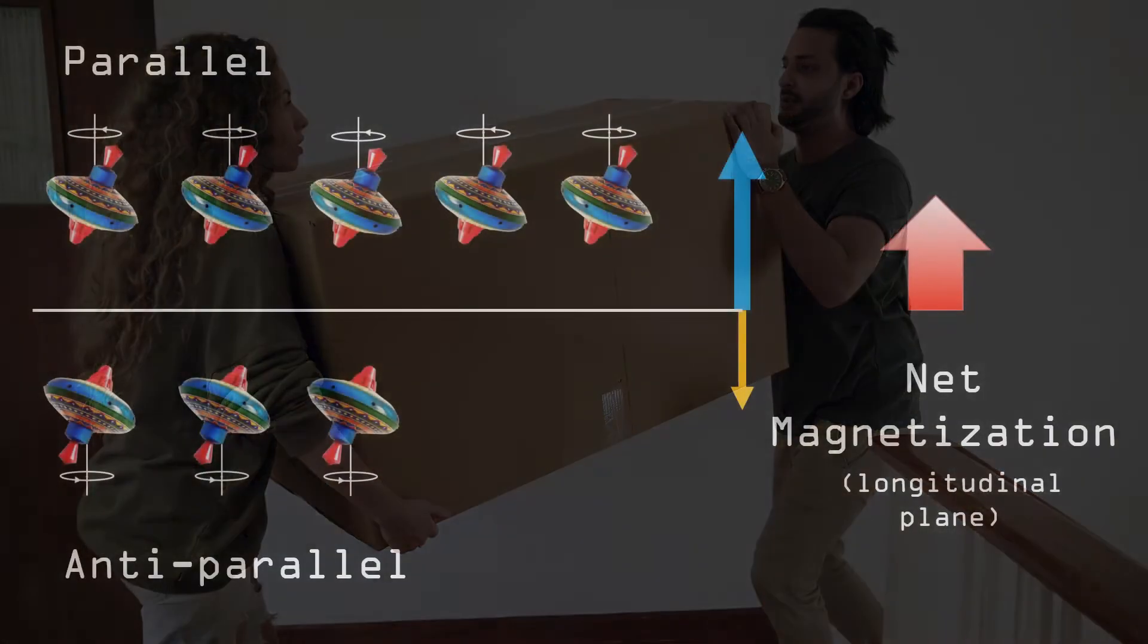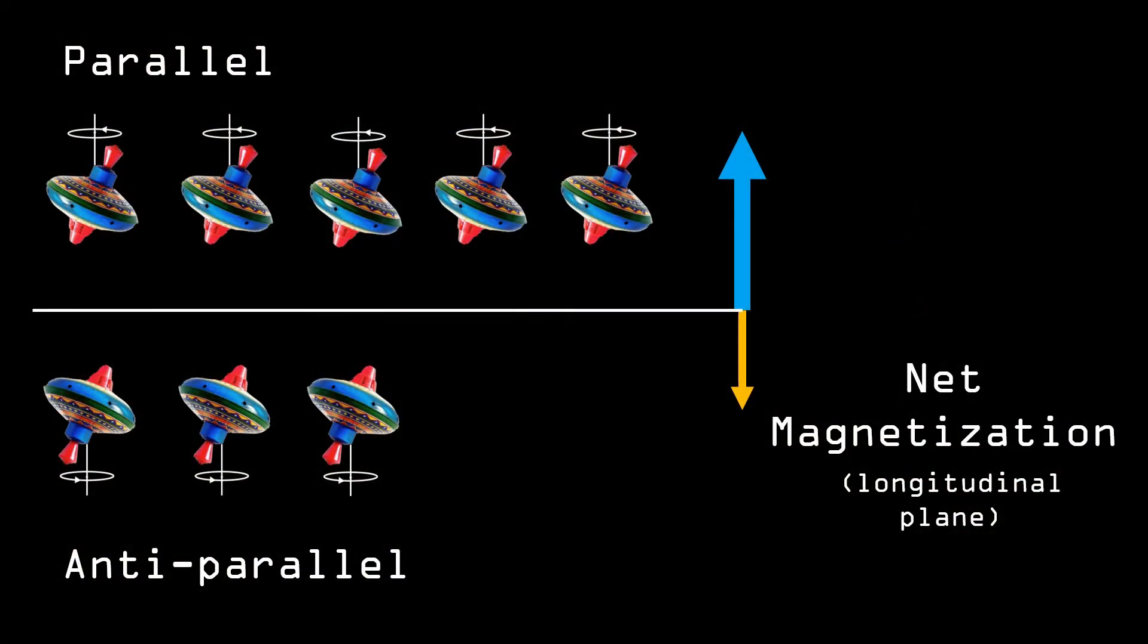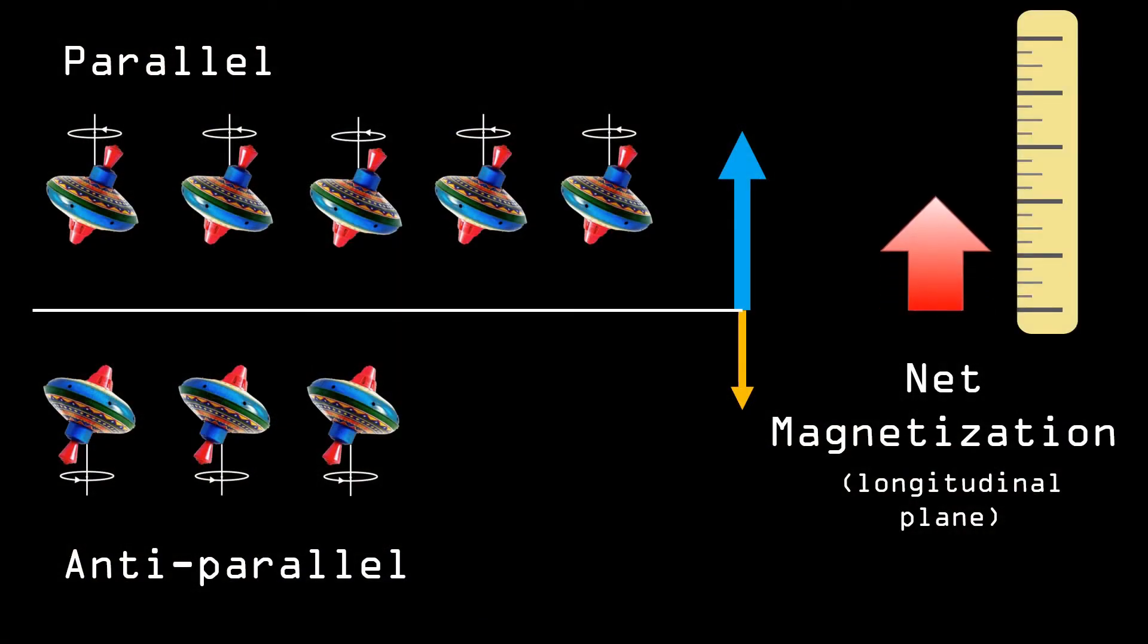First, we have to change the net magnetization and then let it recover to its original value. And this change, we can measure.